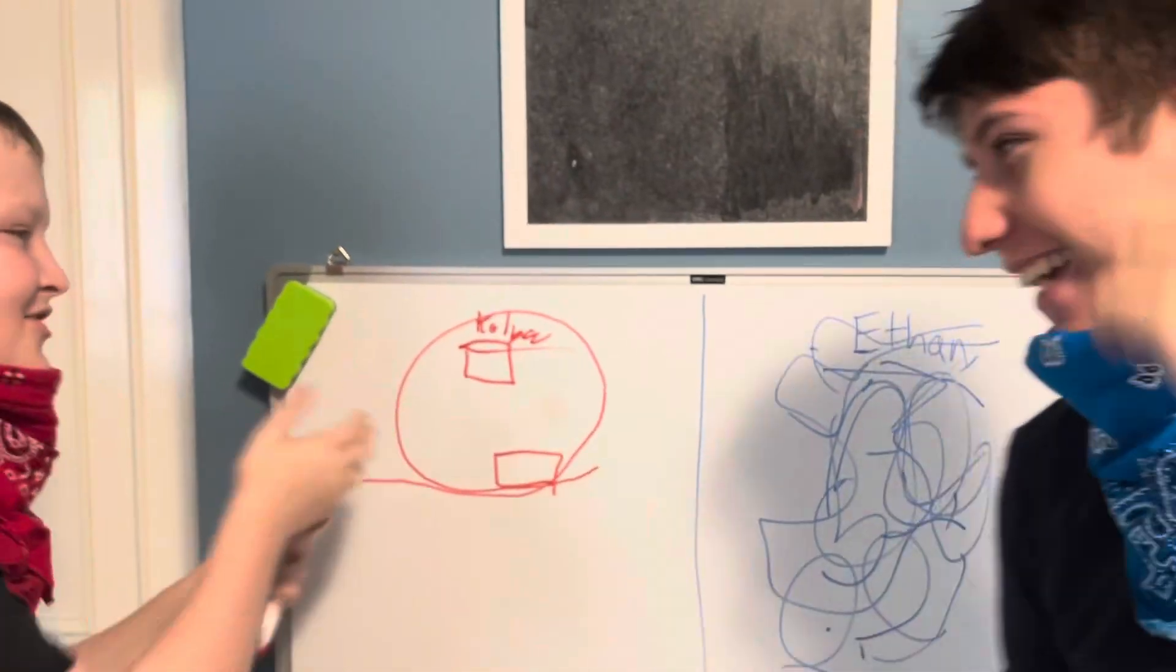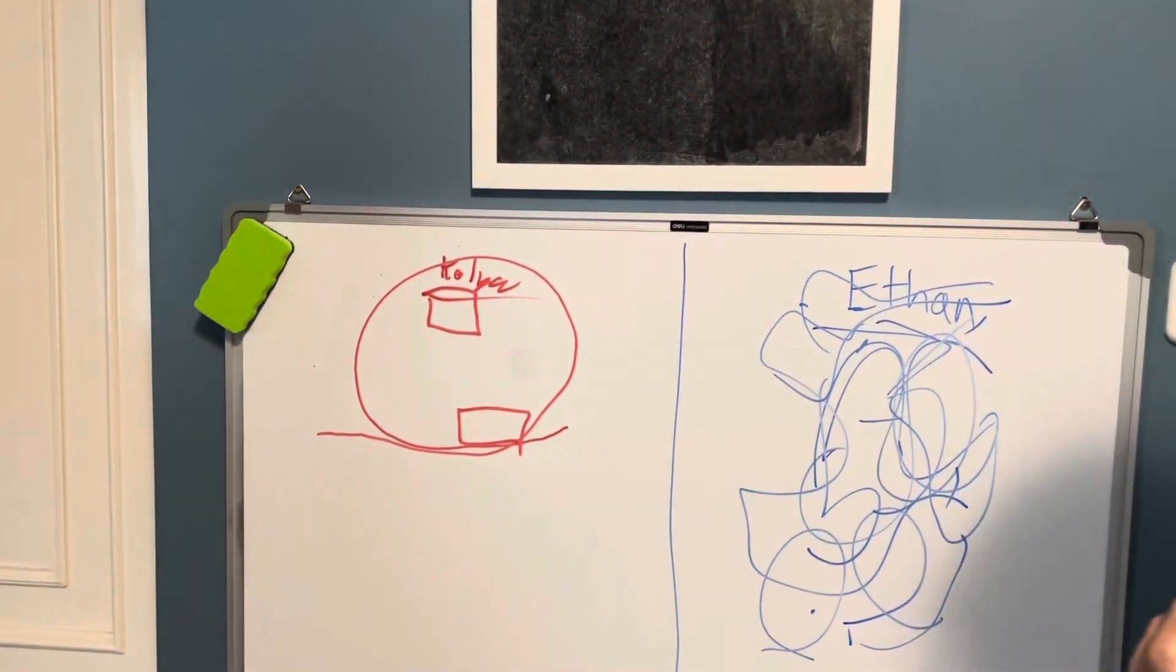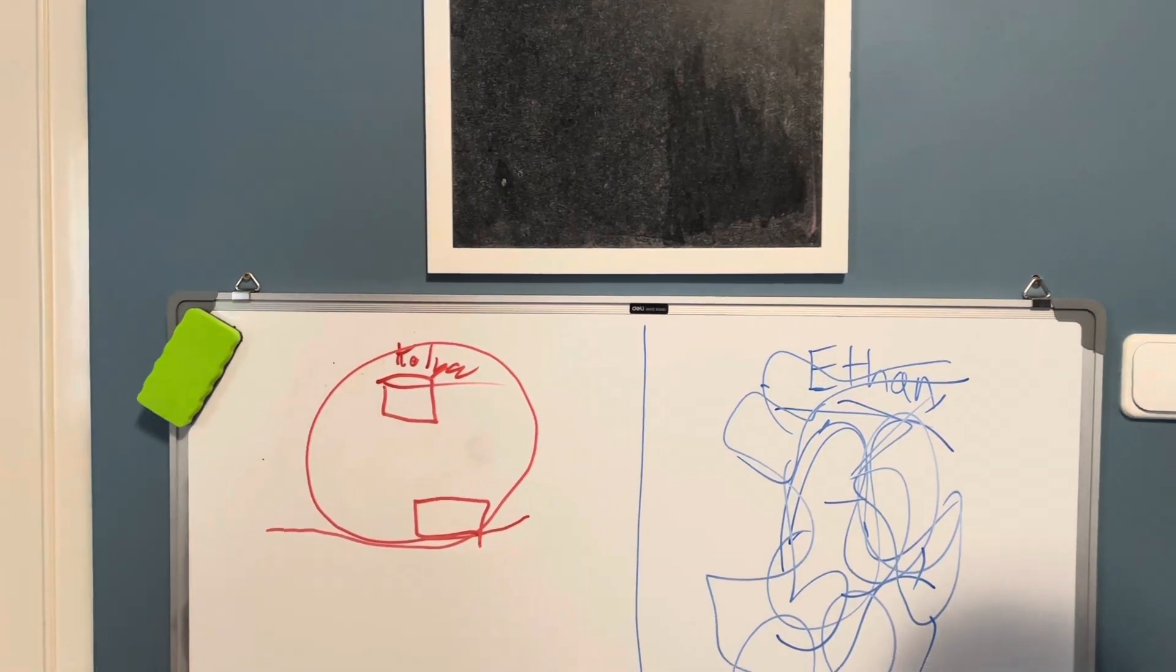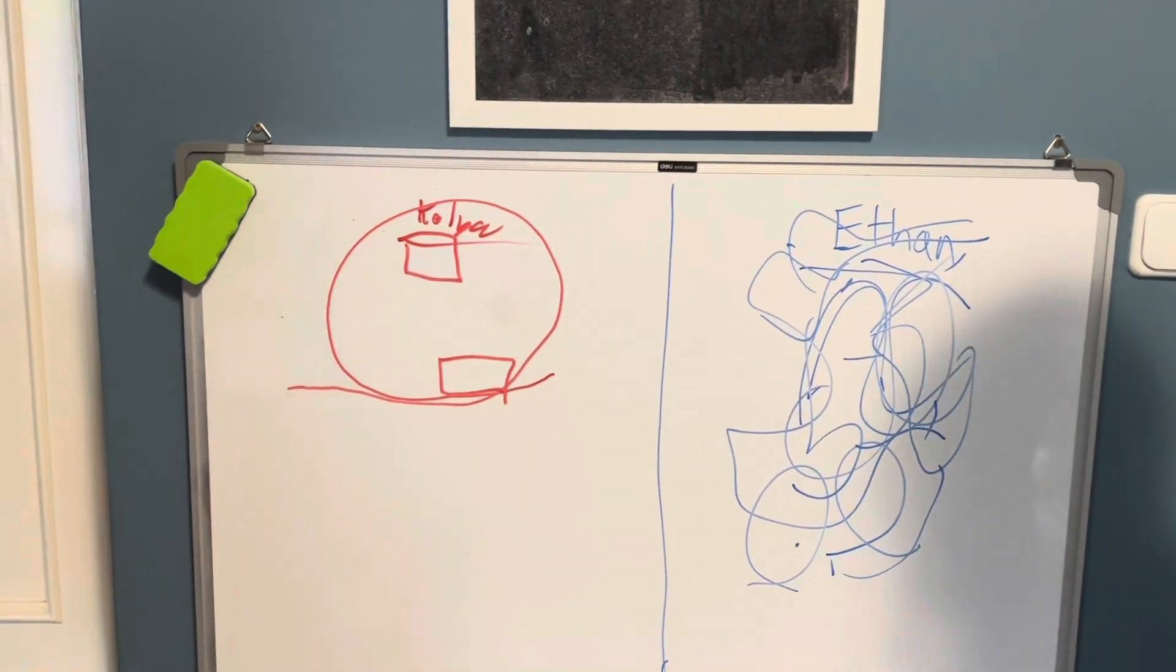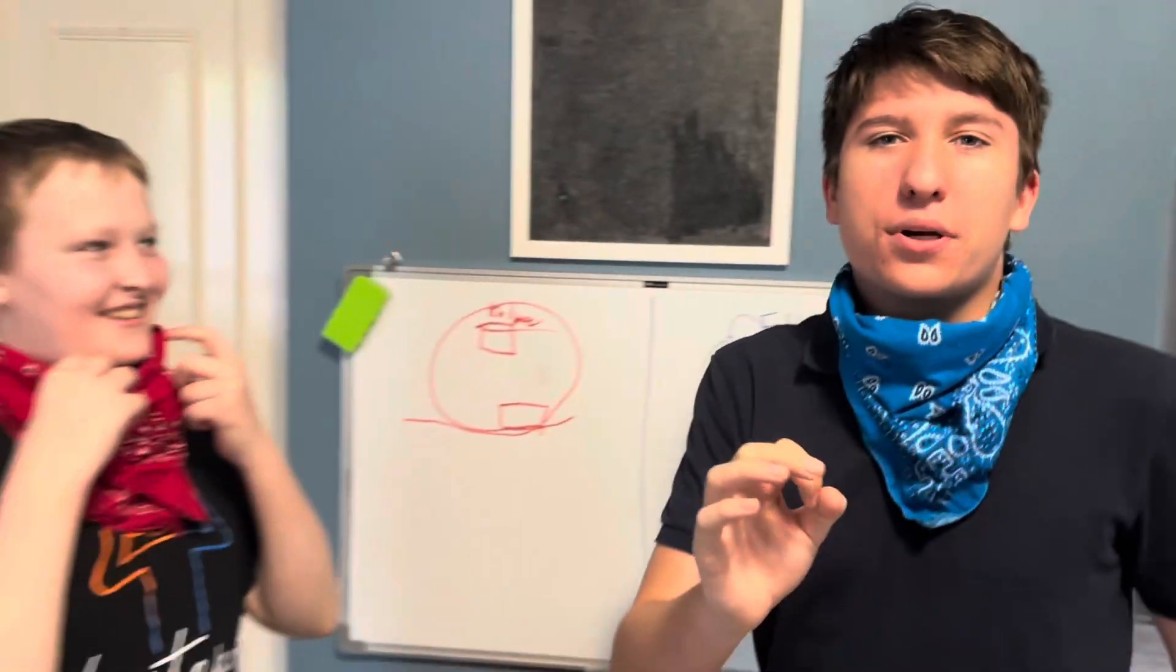Well I'm not quite sure how to judge this but I think Ethan looks like a work of avant-garde art. I think I'm gonna have to say Kolia wins this round. Let's go. 1-0 Kolia.